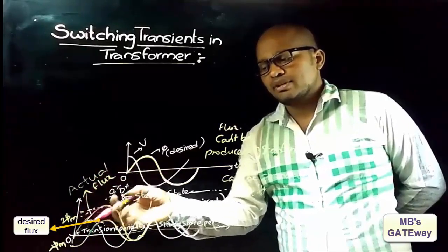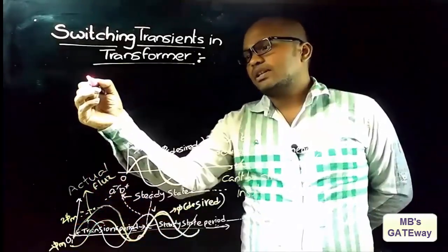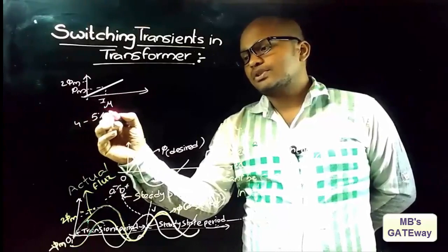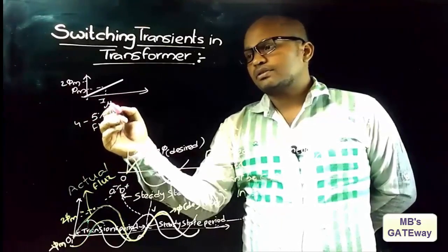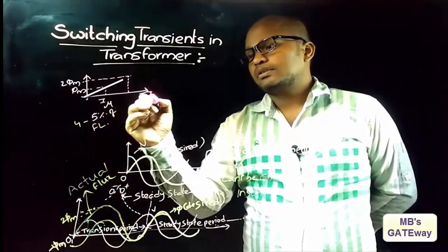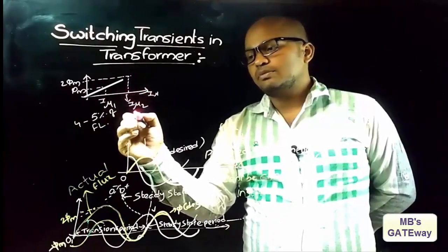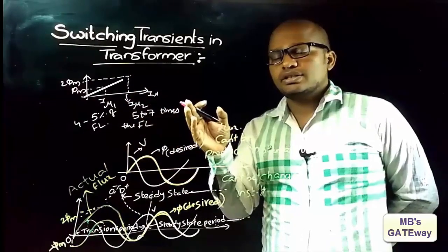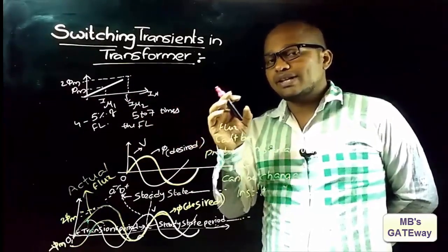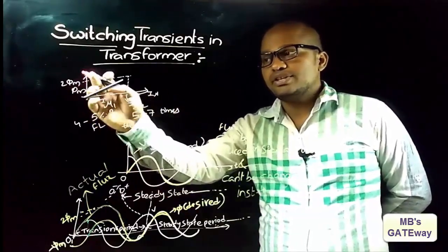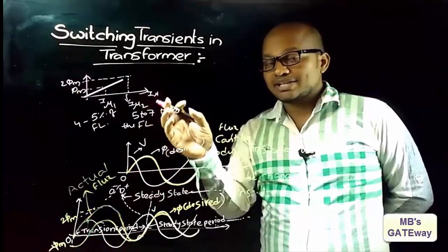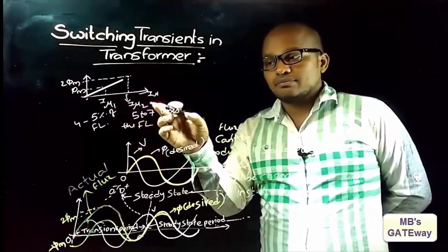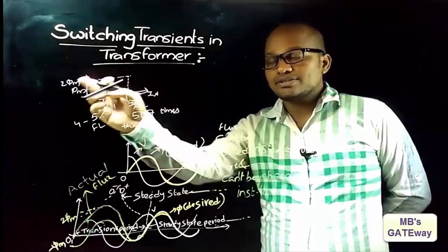What is the effect of having a maximum flux value of φm versus 2φm in the transient period? For φm, the magnetizing current i_mu is 4 to 5 percent of full load current. For 2φm, the magnetizing current i_mu will be 5 to 7 times the full load current. If a machine carries more than full load current, it will damage the machine. In a transformer, a flux of 2φm causes the transformer to draw a magnetizing current of 5 to 7 times the full load current, causing serious damage.